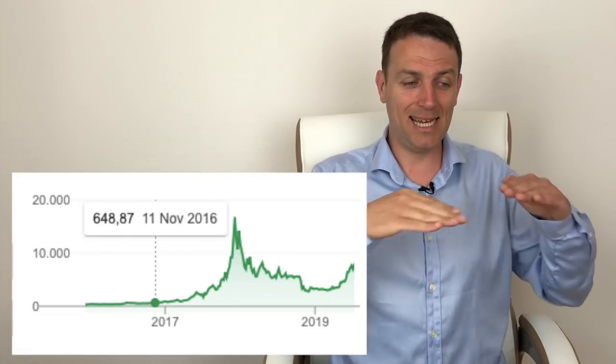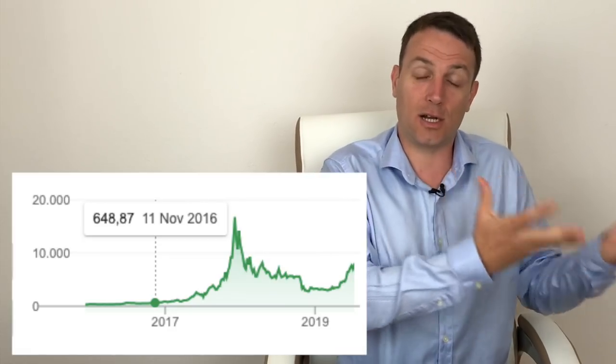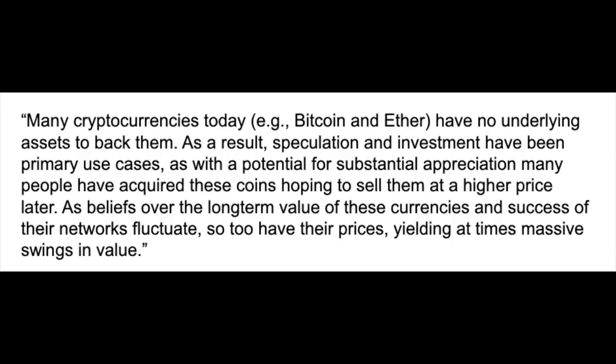Bitcoin and all the other cryptocurrencies were more about speculation. The first rule of monetary policy is to have stability in the currency. If you don't have that stability, then that currency is not used in transactions, and then it's not a currency but somewhere where people like to store value, perhaps or not. Many cryptocurrencies today have no underlying assets to back them. As a result, speculation and investment have been primary use cases. As beliefs over long-term value fluctuate, so have their prices, yielding at times massive swings in value. This is not stability. You cannot use it for transactions. I wouldn't want to be paid in bitcoins, but perhaps at a future date I will like to be paid in Libras, which will diversify my currency on a global basis.